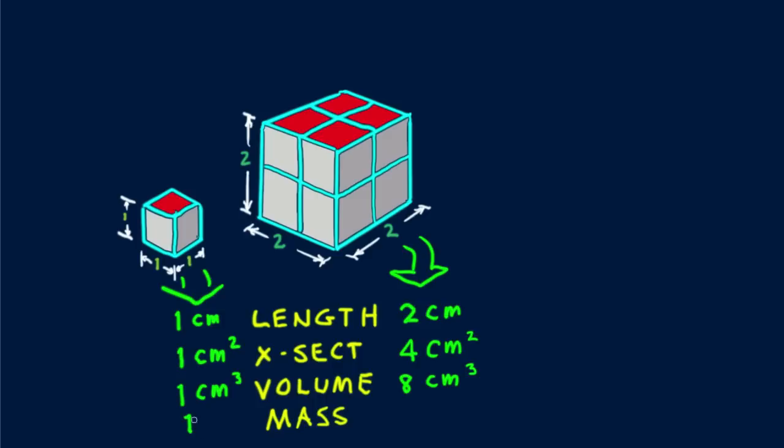Suppose the mass of the small cube is one gram. Since the cubes are the same material, the mass of the larger cube is eight grams — eight times greater. Mass and weight are directly proportional, so eight times the mass means eight times the weight. Cross-section area relates to strength; volume relates to weight.